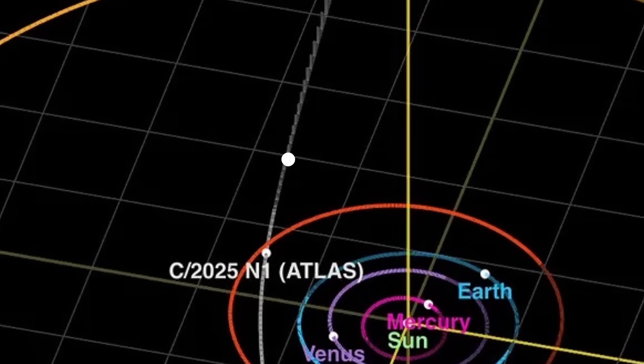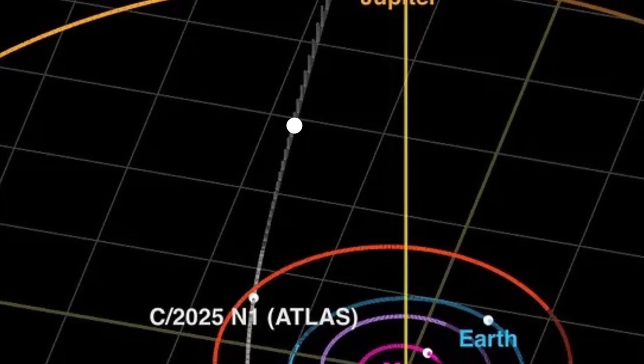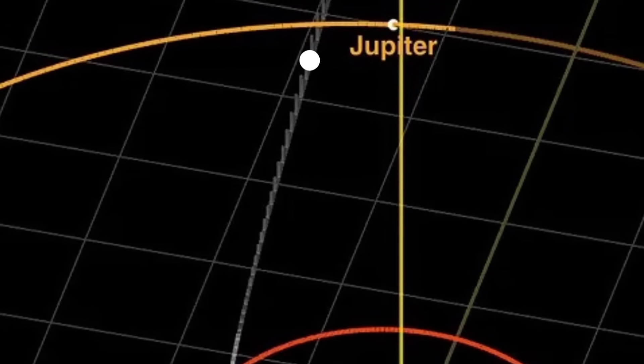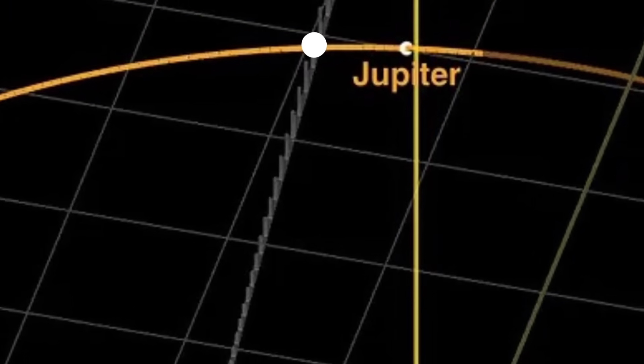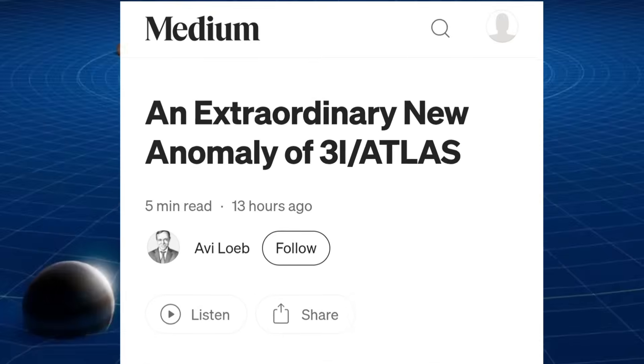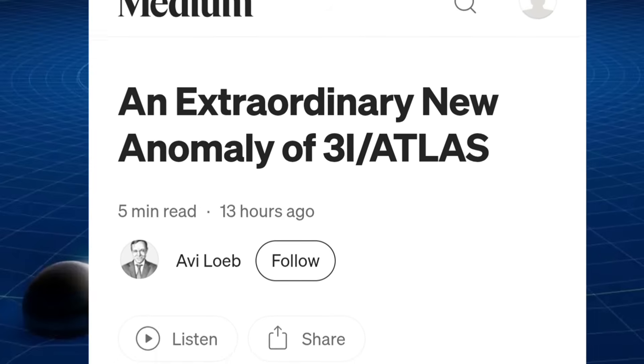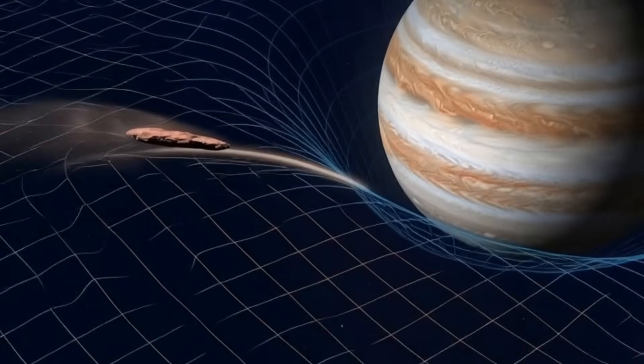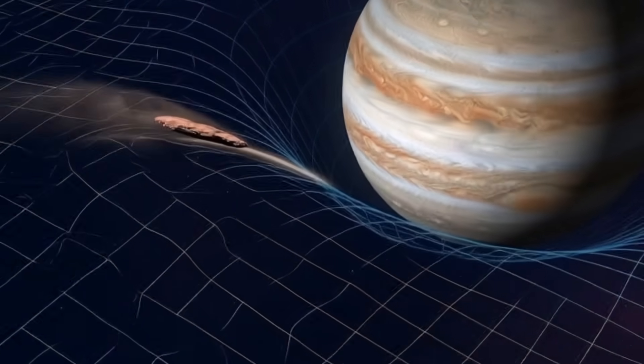The latest analysis of its trajectory shows that 3i Atlas is now moving directly into the gravitational influence of Jupiter with such incredible precision that it doesn't look accidental at all. The alignment of its path around Jupiter is so accurate and finely tuned that many scientists believe such a maneuver is far more consistent with a carefully designed spacecraft than with a natural comet.